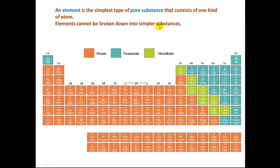Elements cannot be broken down into simpler substances. Again, an element is the simplest type of pure substance and consists of only one type of atom. For example, here we have carbon. The element carbon consists of only carbon atoms. The element oxygen consists of only oxygen atoms. The element gold consists of only gold atoms. Each element is composed of a different type of atom.